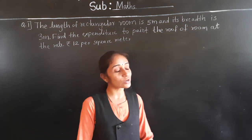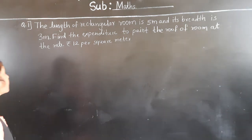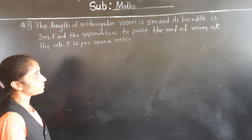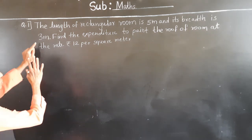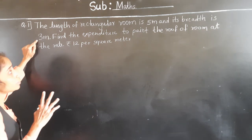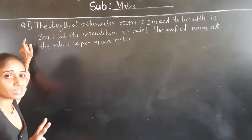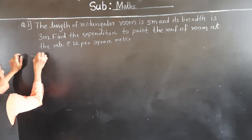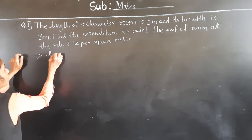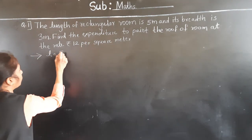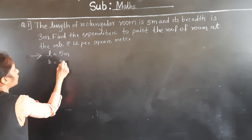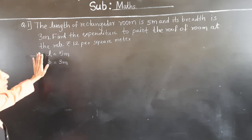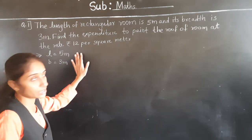Hello everyone, let's learn today some extra examples. The length of a rectangular room is 5 meters and its breadth is 3 meters. So what is given? Length and breadth of the rectangular room is given. Length is 5 meters and breadth is 3 meters.